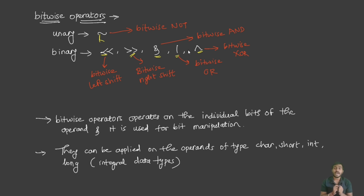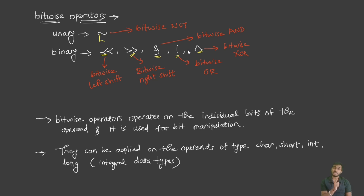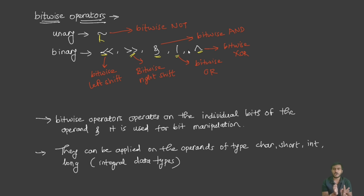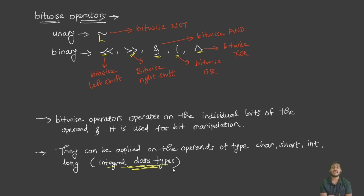Another important thing about bitwise operators is that they can be applied only on operands of type char, short, int, and long. You cannot apply bitwise operators on float, double, or boolean. In short, bitwise operators can be applied only on integral data types — remember this. You cannot apply them on anything other than integral data types.